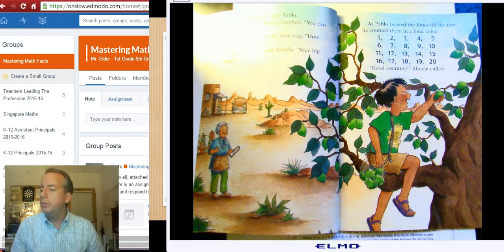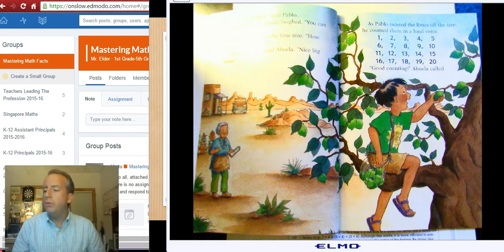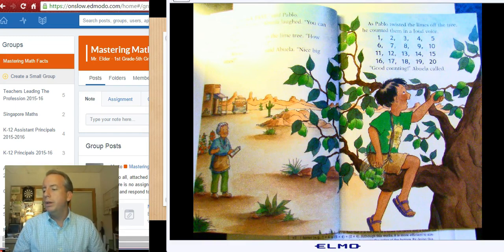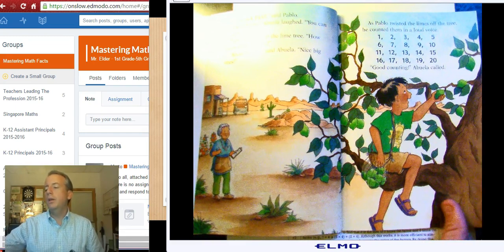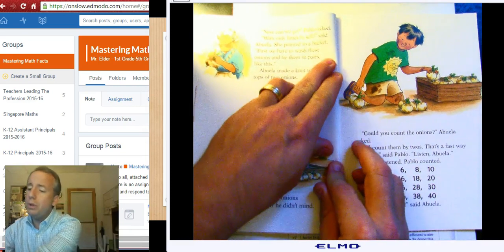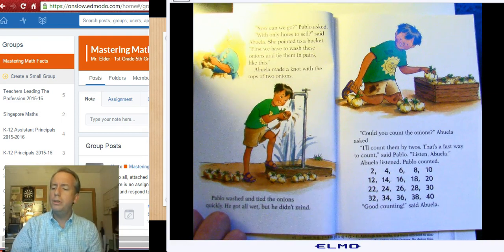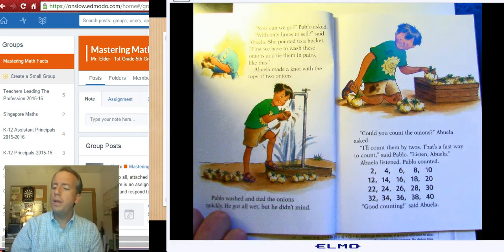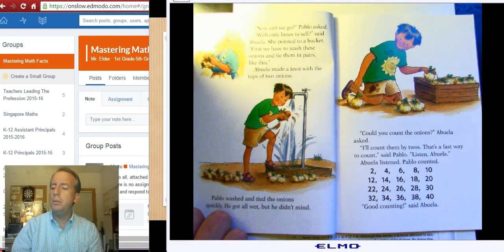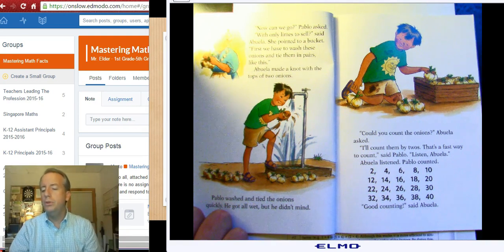Pablo scurried up the lime tree. How many should I pick? About 20, said Abuela. Nice big ones. As Pablo twisted the limes off the tree, he counted them in a loud voice. One, two, three, four, all the way up to 20. Good counting, Abuela called.